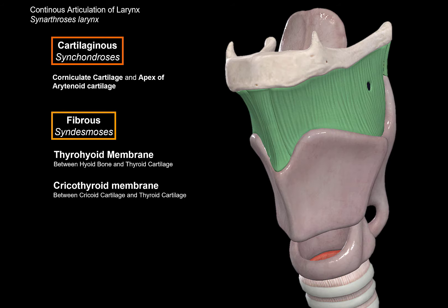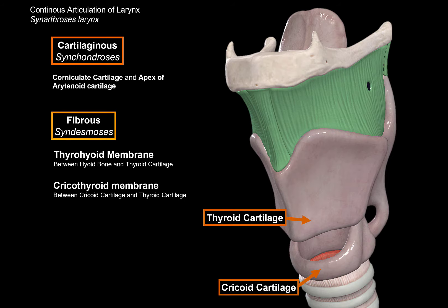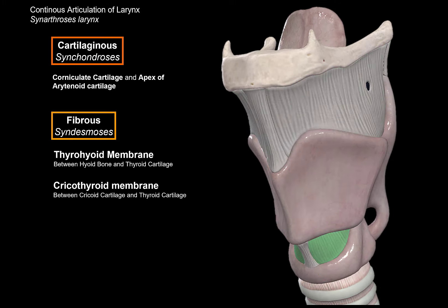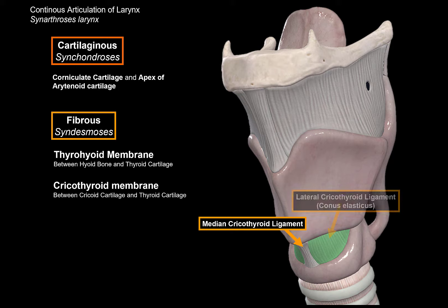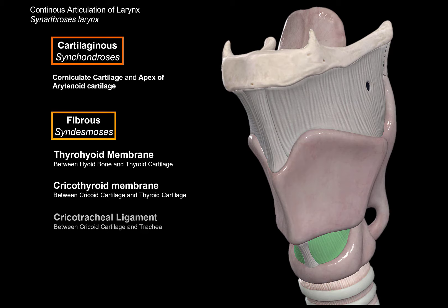Next we have the cricothyroid membrane, which lies between the thyroid cartilage and the cricoid cartilage. The cricothyroid membrane is made up of two ligaments: one is the median cricothyroid ligament, and the other is the lateral cricothyroid ligament, or conus elasticus. The conus elasticus is really important and I'll talk briefly about it later in this video. Then there is the cricotracheal ligament between the cricoid cartilage and the trachea.